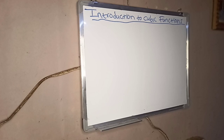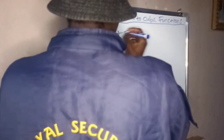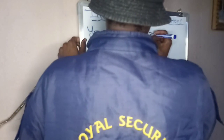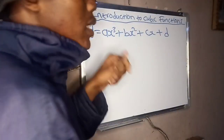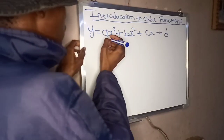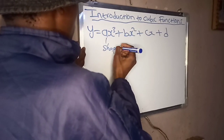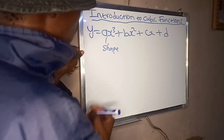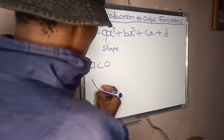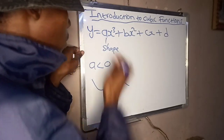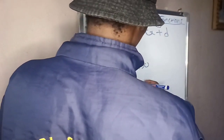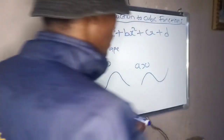Let us begin by defining what a cubic function is. A cubic function is a polynomial of the third degree of the form y equals ax cubed plus bx squared plus cx plus d. This is its standard form, where 'a' will always determine the shape of the function. If a is less than zero we get this shape, and if a is greater than zero we get this shape.